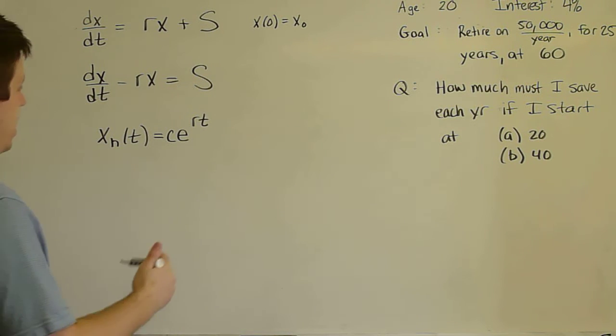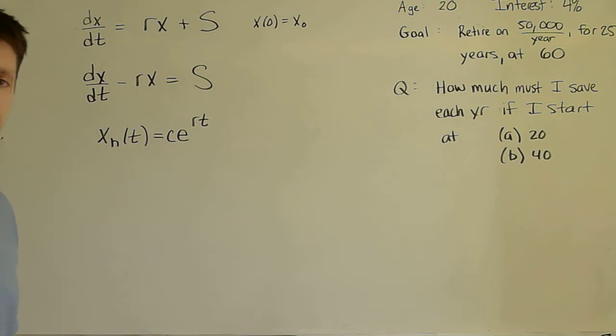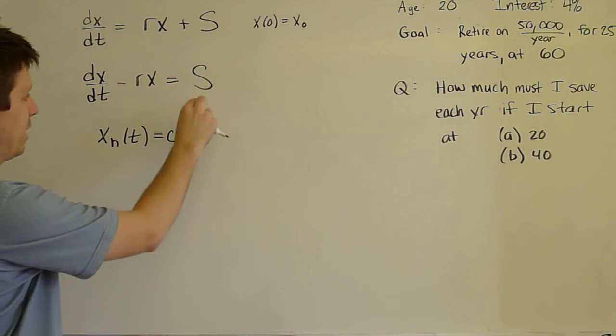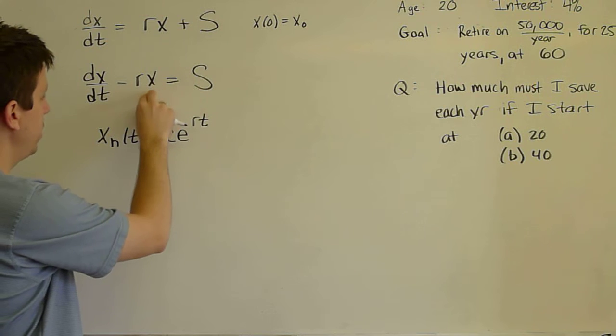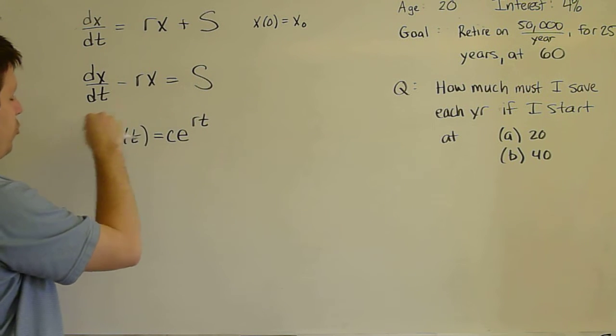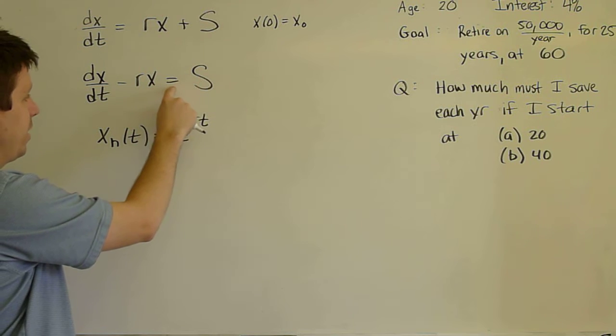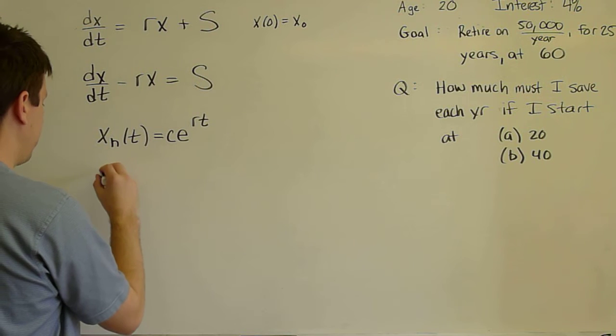And then how to solve for the particular solution here is a particularly easy example of the method of undetermined coefficients. So if we guess a constant, if X must be a constant because the forcing is a constant, then we guess that constant, call it A. The derivative of a constant is 0. We get -rA = S. And so A must be S over -r.